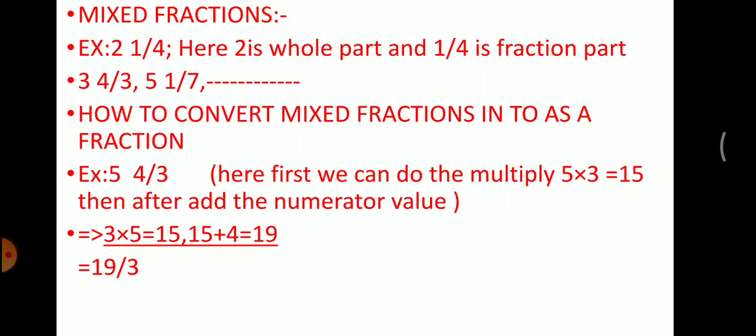Now, how do we convert a mixed fraction into a fraction? Take the example 5 and 4/3. First, multiply the denominator by the whole part: 5 × 3 = 15. Then add the numerator: 15 + 4 = 19. So 5 and 4/3 converts to 19/3.